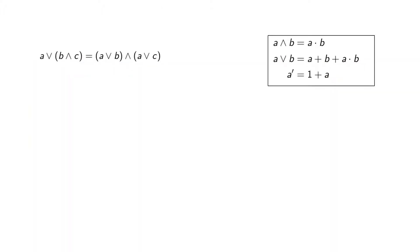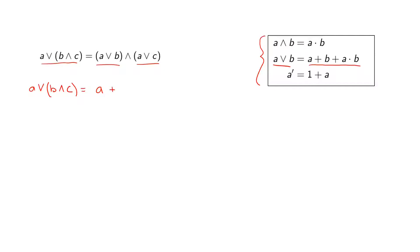Let us look at an example of this link between the Boolean ring and the Boolean algebra. We are going to use the distributive law which says that A OR (B AND C) equals (A OR B) AND (A OR C). Using the link between ring and algebra, we write the left-hand side A OR (B AND C). Since A OR B equals A plus B plus AB, this becomes A plus BC plus ABC.